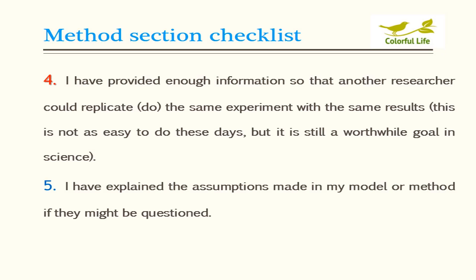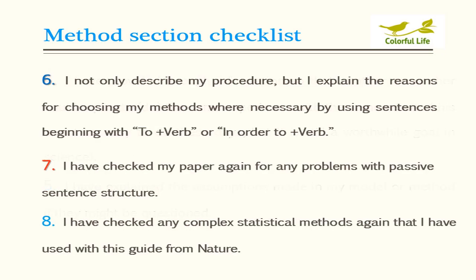Step 5: I have explained the assumptions made in my model or method, if they might be questioned. Step 6: I not only describe my procedure, but I explain the reasons for choosing my methods where necessary, by using sentences beginning with 'to' plus verb, or 'in order to' plus verb.